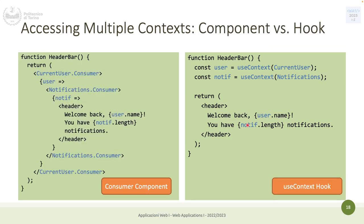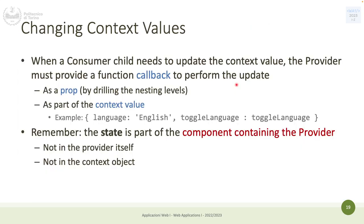You can access multiple contexts simultaneously. With the component approach it is slightly more complicated because you have components, callbacks, and nested components. With the hook approach it is more linear — similar to how using async/await makes code more linear compared to chaining promises. Both approaches can do the same things. If a consumer needs to update the context, the provider must expose a callback to perform this update.